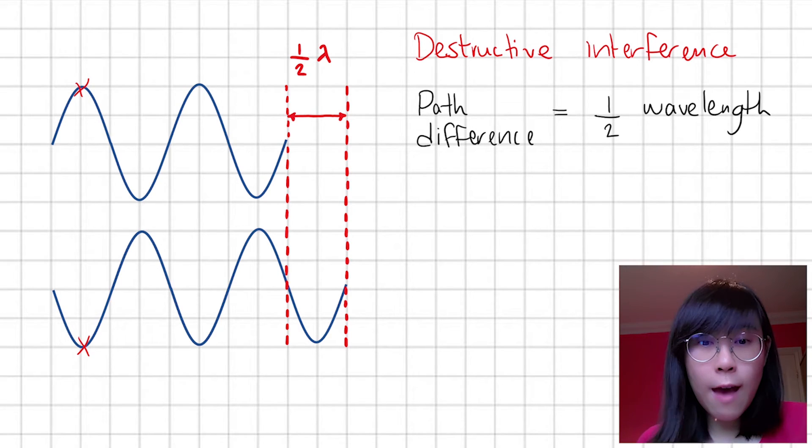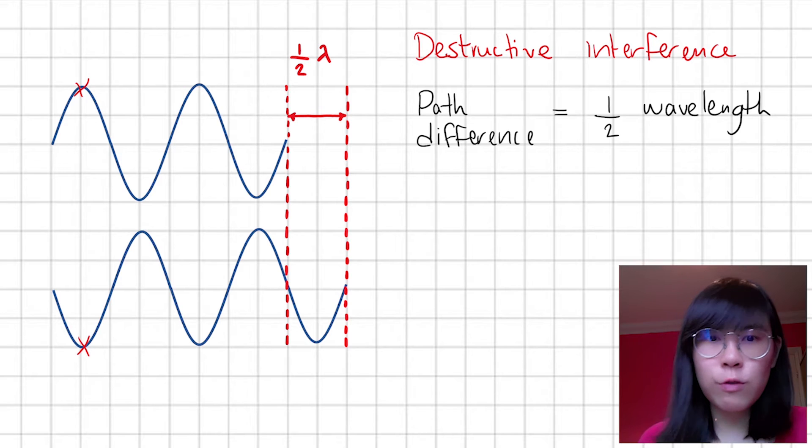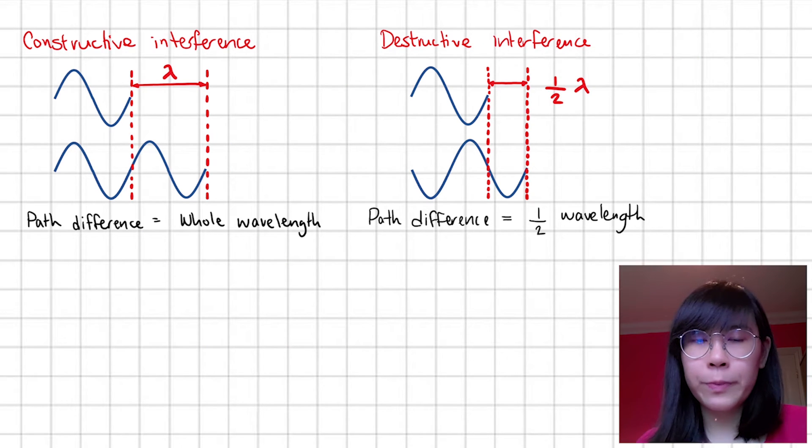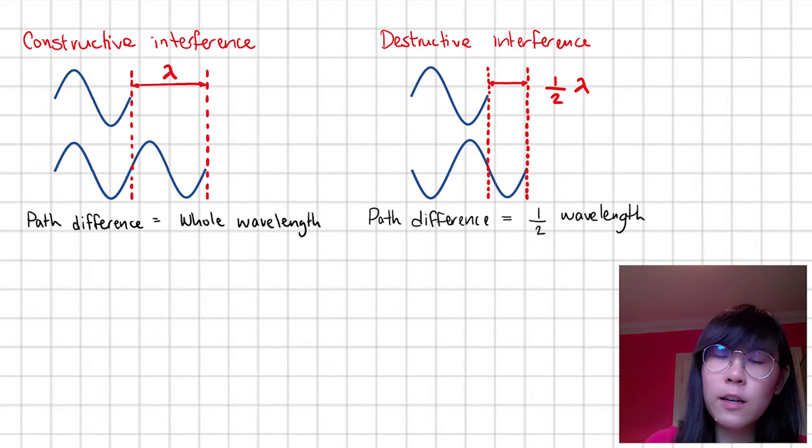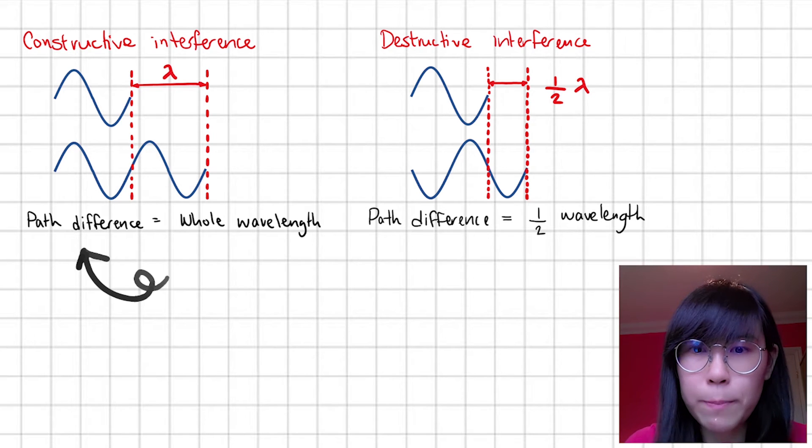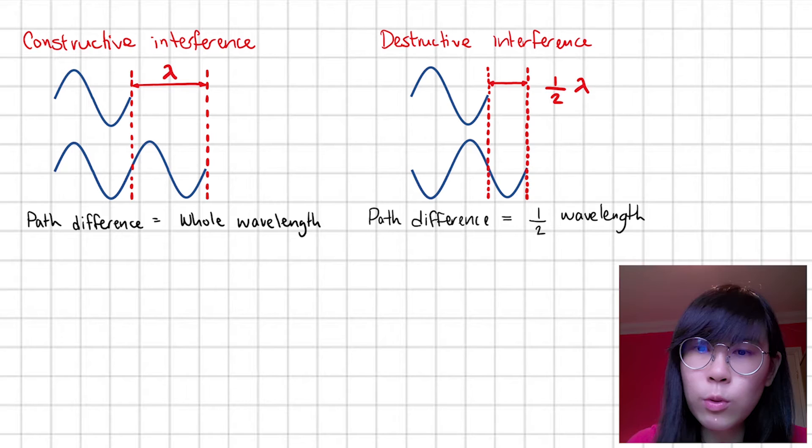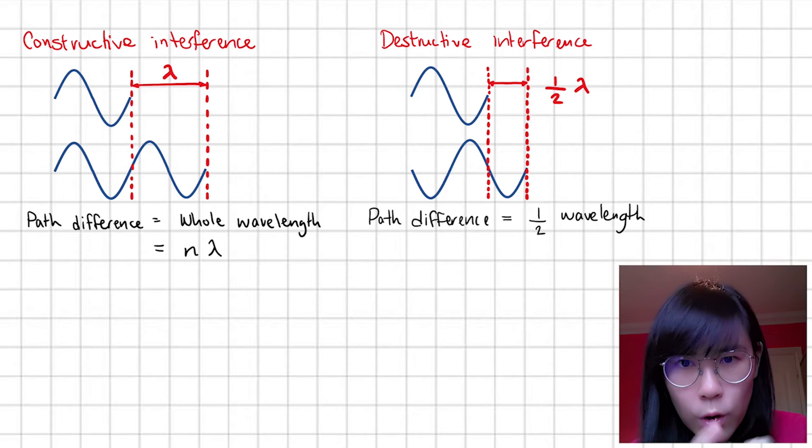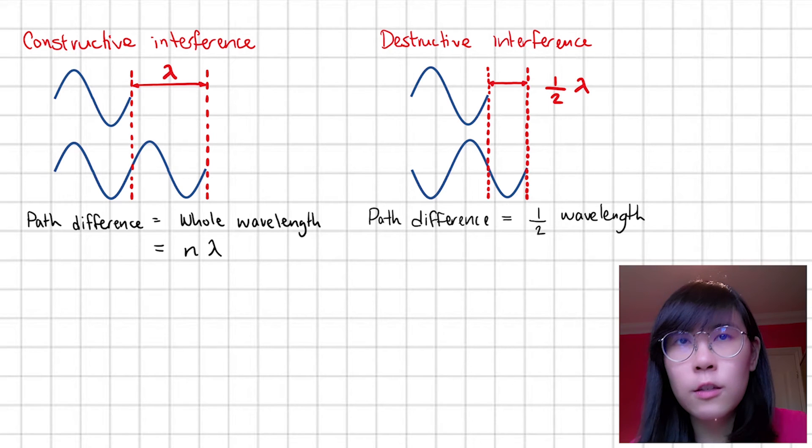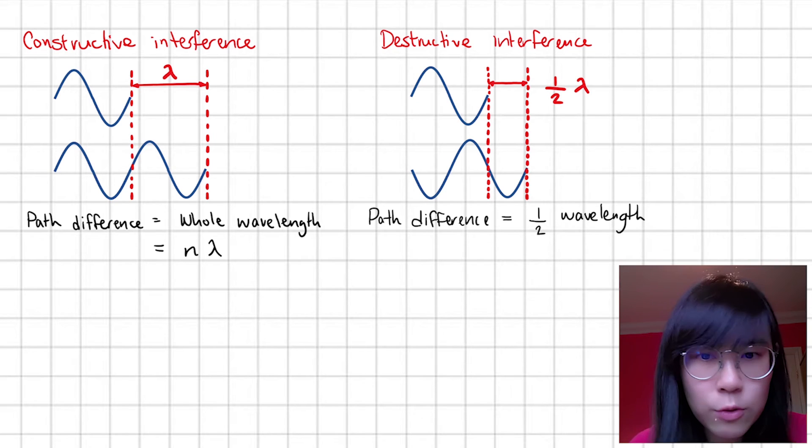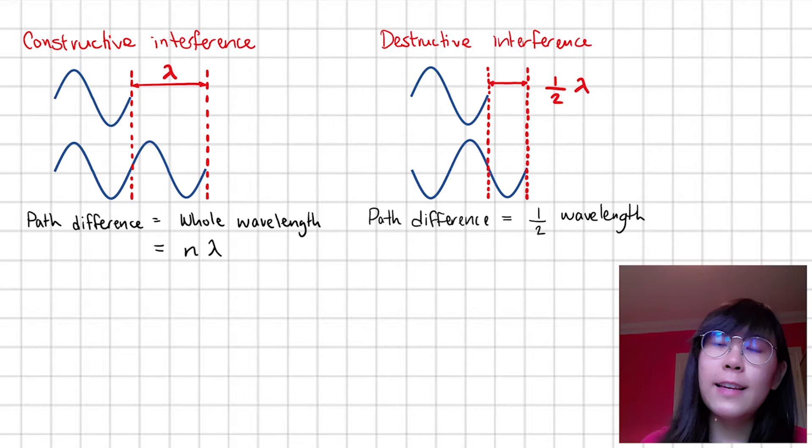So here we have two types of interference, constructive and destructive. Now let's generalize this mathematically. We can get constructive interference when the path difference is equal to n times the wavelength, where n we say is a whole number. We are always going to get constructive interference whether the path difference is one whole wavelength, two times the wavelength, three times, or so on, as long as it's a whole number.